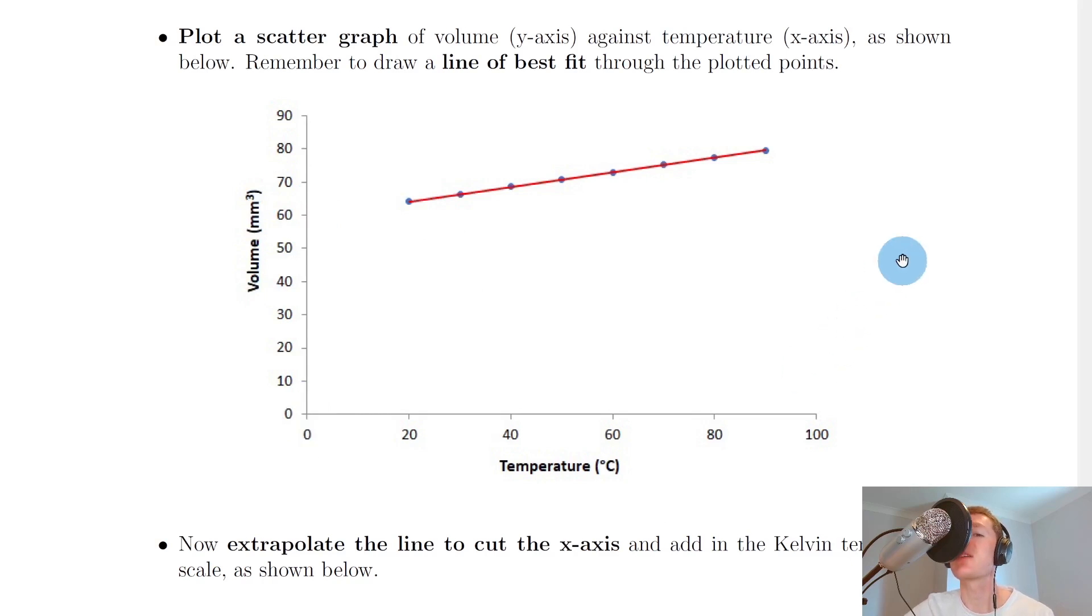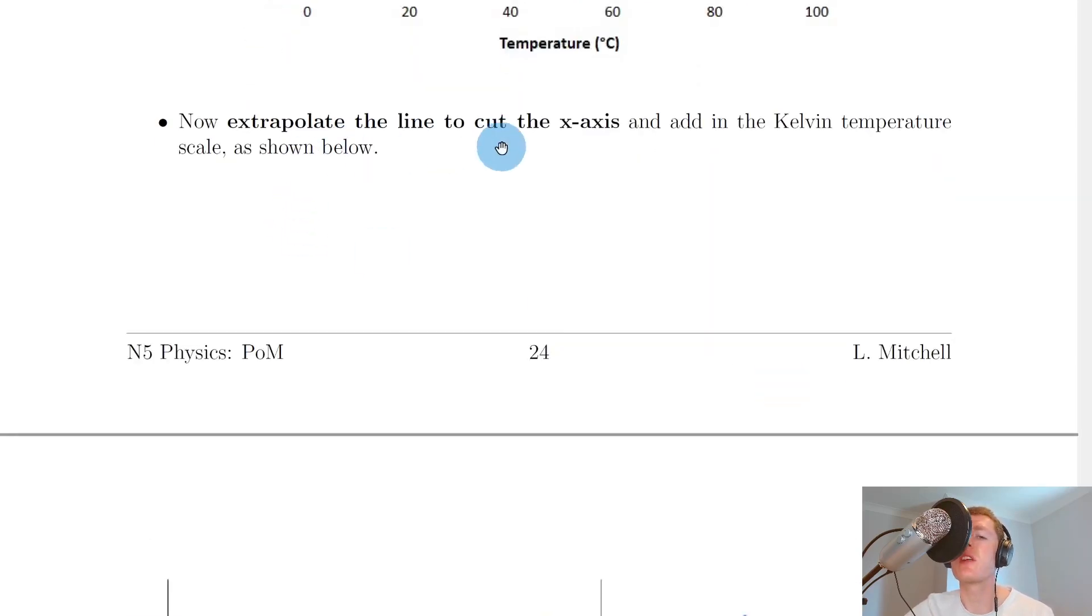We're going to do the exact same trick we did in the Gay-Lussac law experiment to get this line passing through the x-axis because this will give us a much more useful graph. Now extrapolate the line to cut the x-axis and add in the Kelvin temperature scale. Remember extrapolate just means extend.